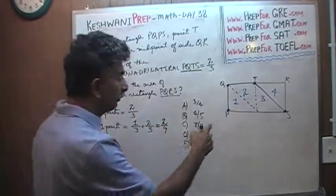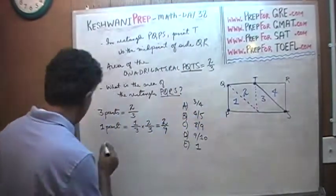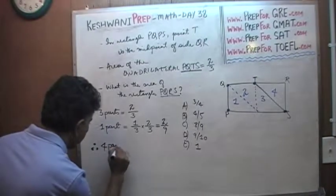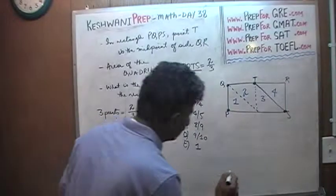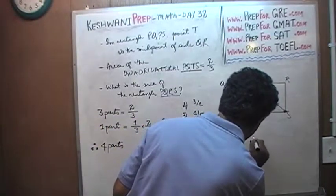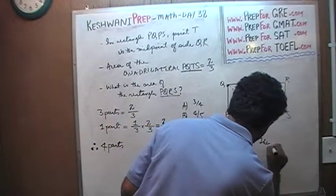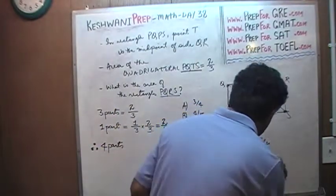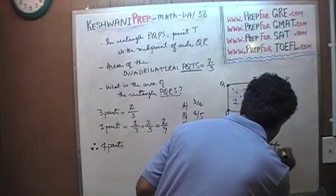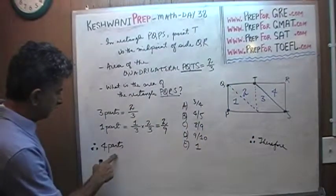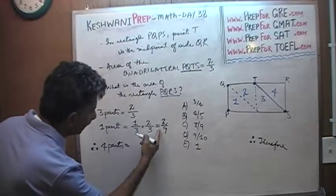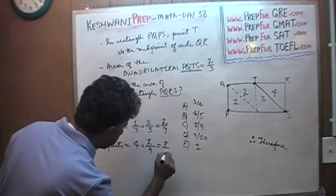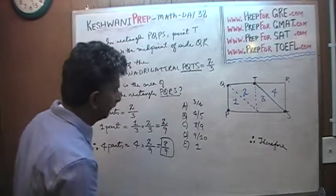We are interested in finding out the area of four parts, one, two, three, four. So, therefore, four parts - and for those of you who do not know, this symbol means therefore. Therefore, four parts equals four times that amount. So, voila, that's your answer. Eight-ninths.